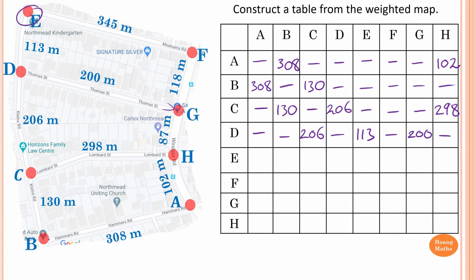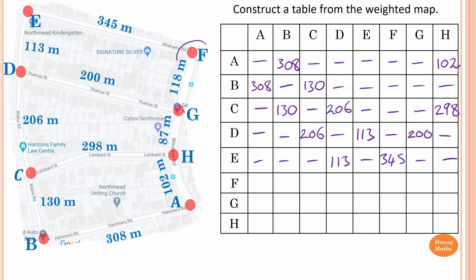For vertex E, the only direct connections are D and F. E to D is 113. Another direct connection is F, so E to F is 345. The rest of the vertices don't have any direct connection with E. For F, the only direct connections are E and G. F to E is 345, and F to G is 118. The rest have no direct connection with F.